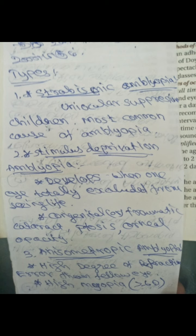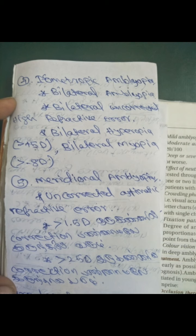When we look at anisometropic amblyopia, if something happened — for example a cataract before surgery — this would be a relevant case. We call this anisometropic amblyopia. Isometropic amblyopia means both eyes have the same power — both depend on the same high refractive error. For example, bilateral high hyperopia of plus five, or bilateral high myopia of minus eight — this is isometropic amblyopia.